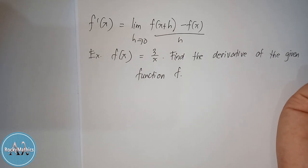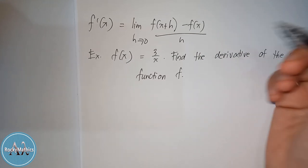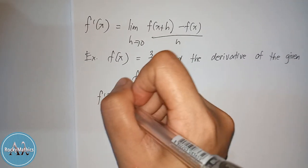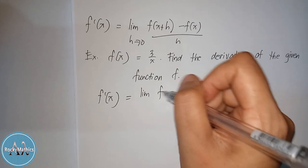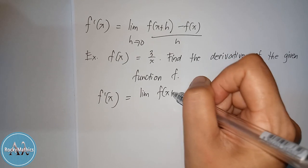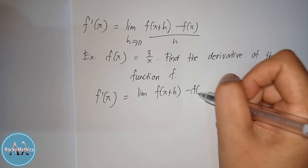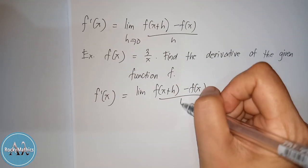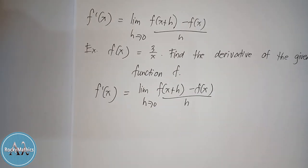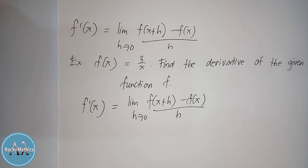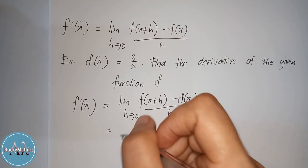All we have to do is just follow this formula. To answer this problem, we have f prime of x is equal to the limit of f of x plus h, minus f of x, over h, as h approaches 0. The formula is our guide, so all we have to do is follow it.